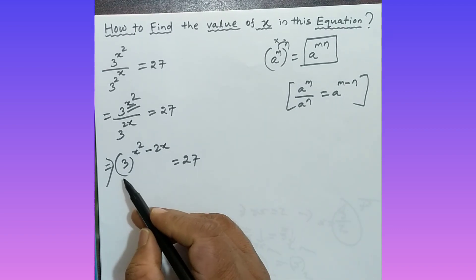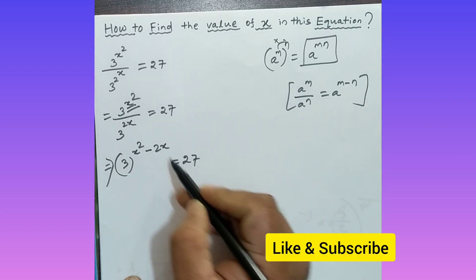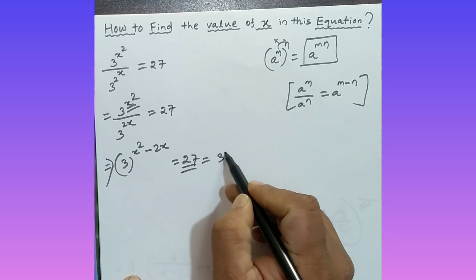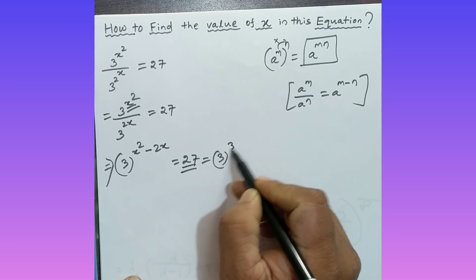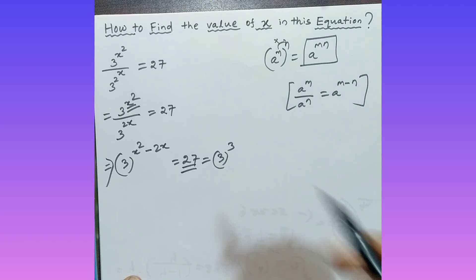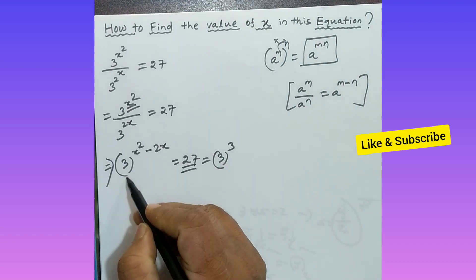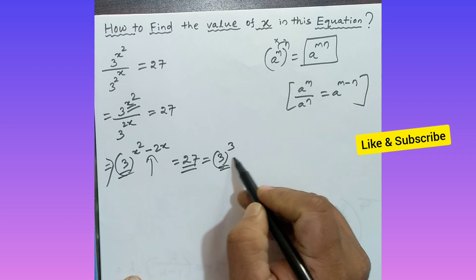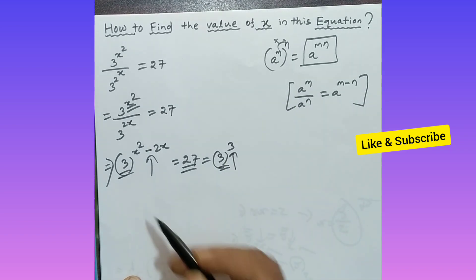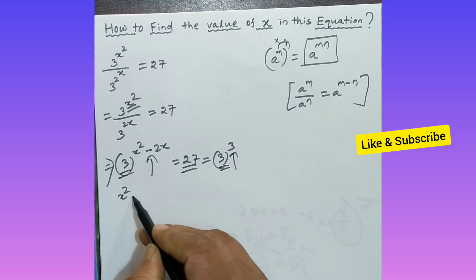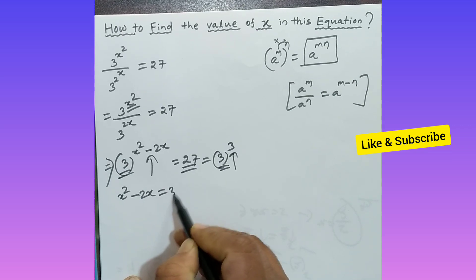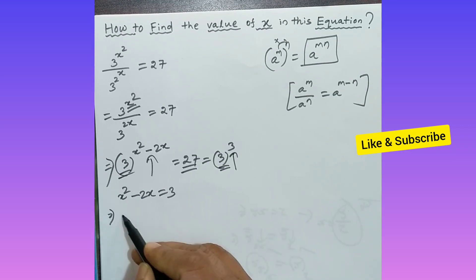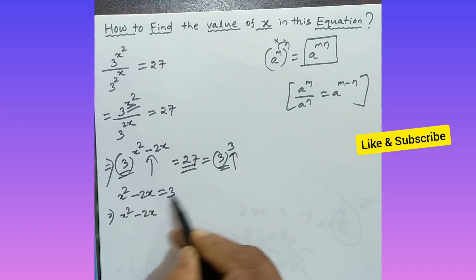So we have 3 to the power x squared minus 2x, equal to 27. Now, 27 can also be written as 3 to the power 3. Since the base is the same on both sides and only the powers differ, we can equate the exponents: x squared minus 2x equals 3.